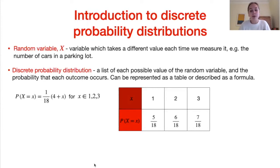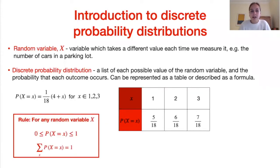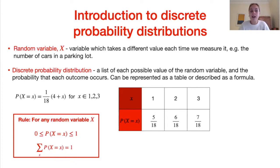We can represent that information in a table: the first row shows the possible values 1, 2, 3, and the second row shows the calculated probability of each outcome. There are two rules that must always hold for discrete probability distributions: first, each probability must lie between 0 and 1; second, the sum of all probabilities over all possible values must equal 1.